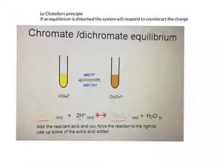That also includes acid. The observation here is that when you add acid, it changes from yellow to orange. Let's investigate whether Le Chatelier's principle could have predicted that.